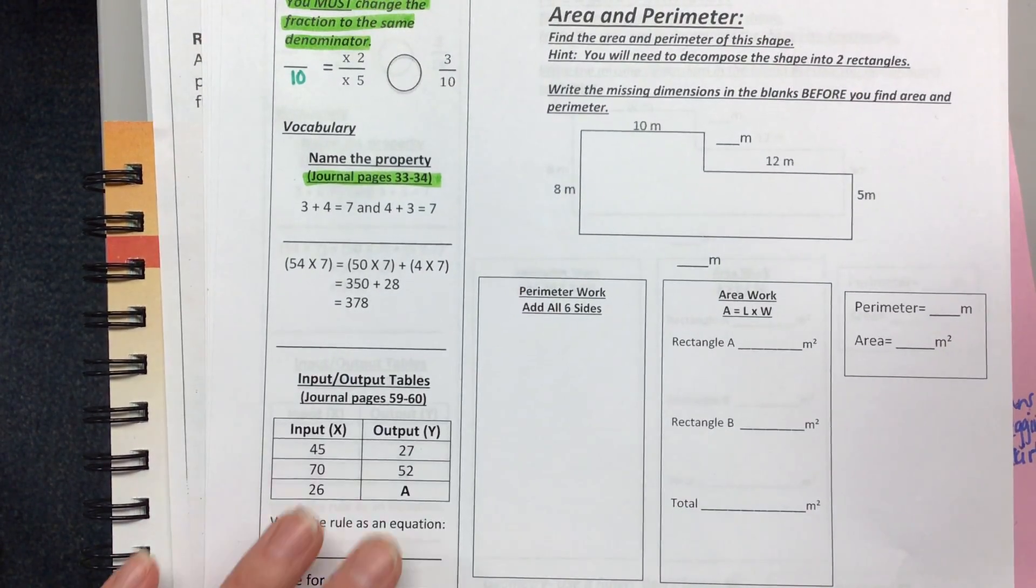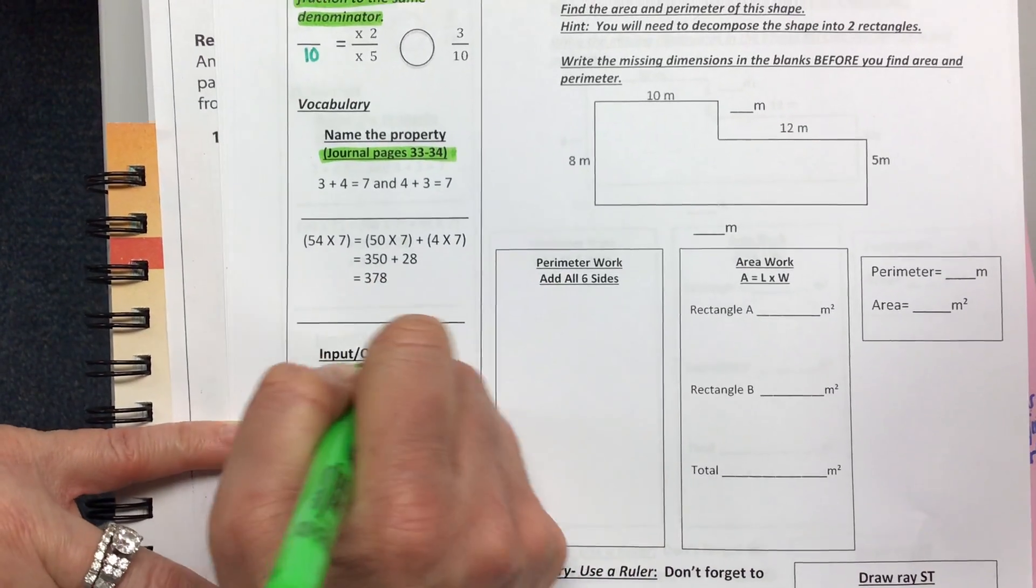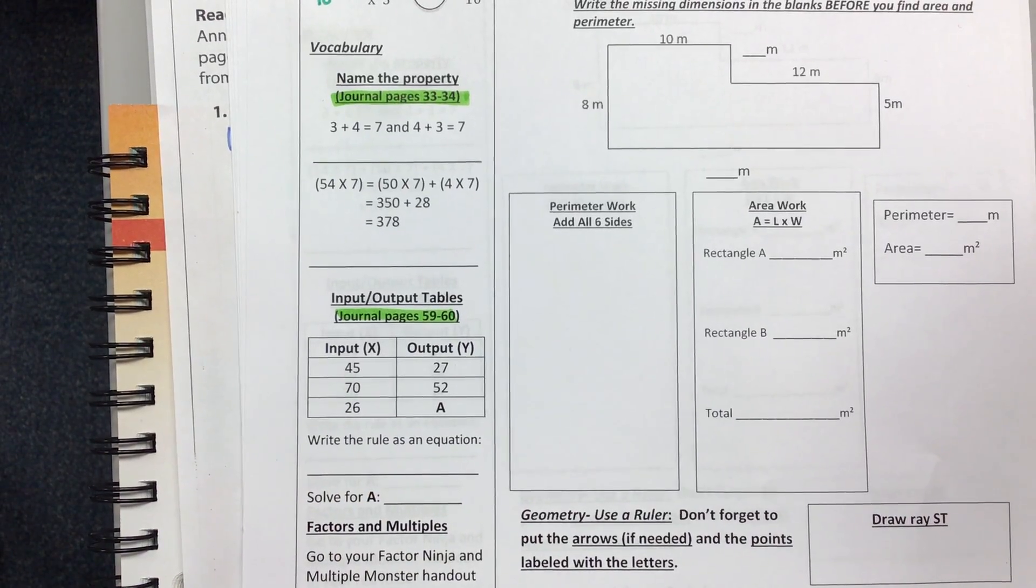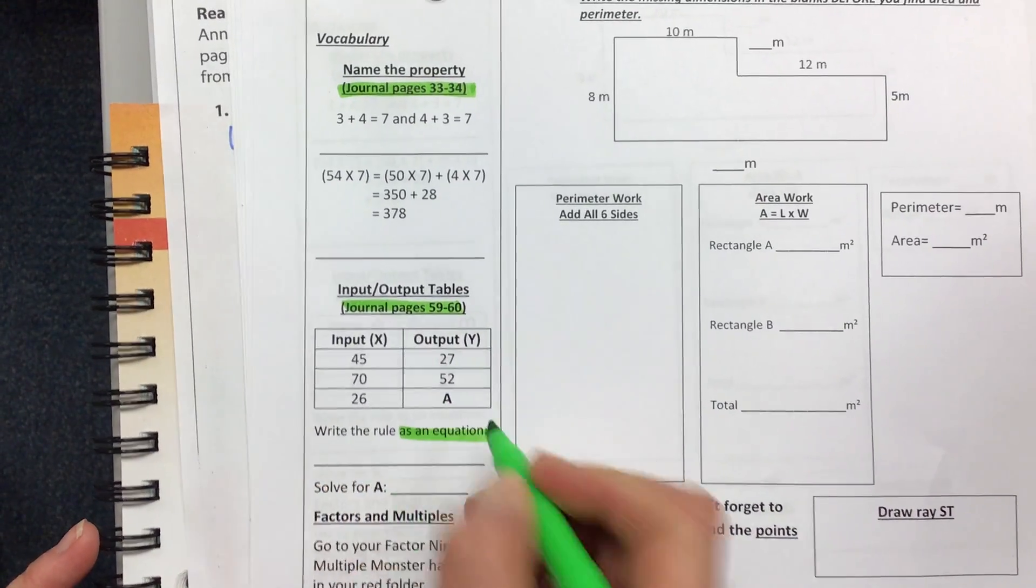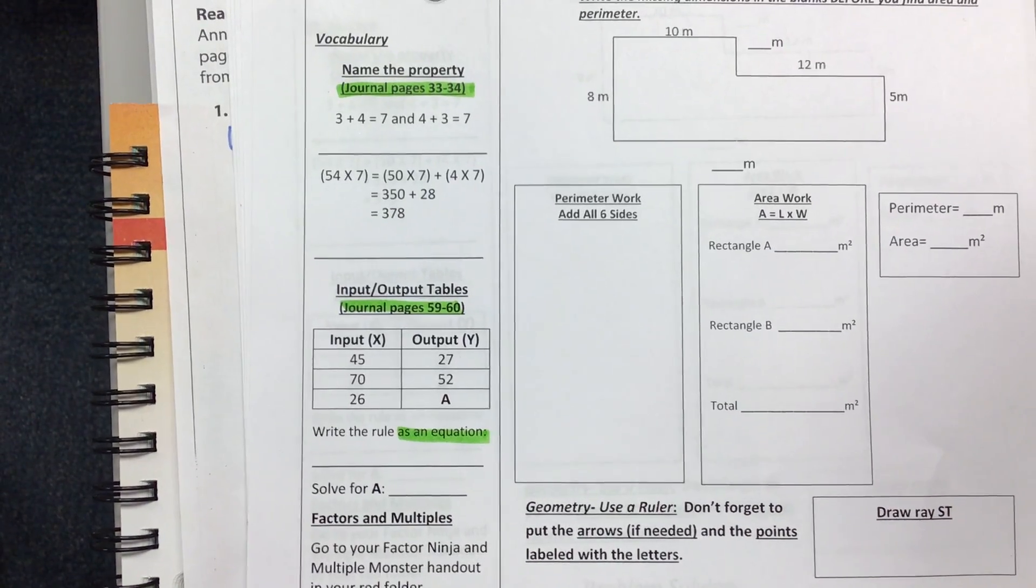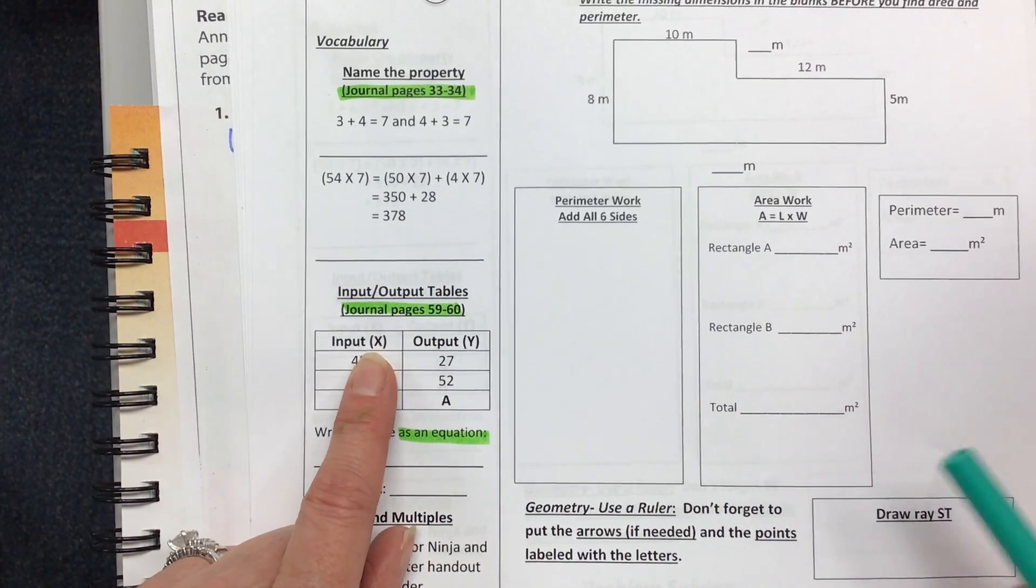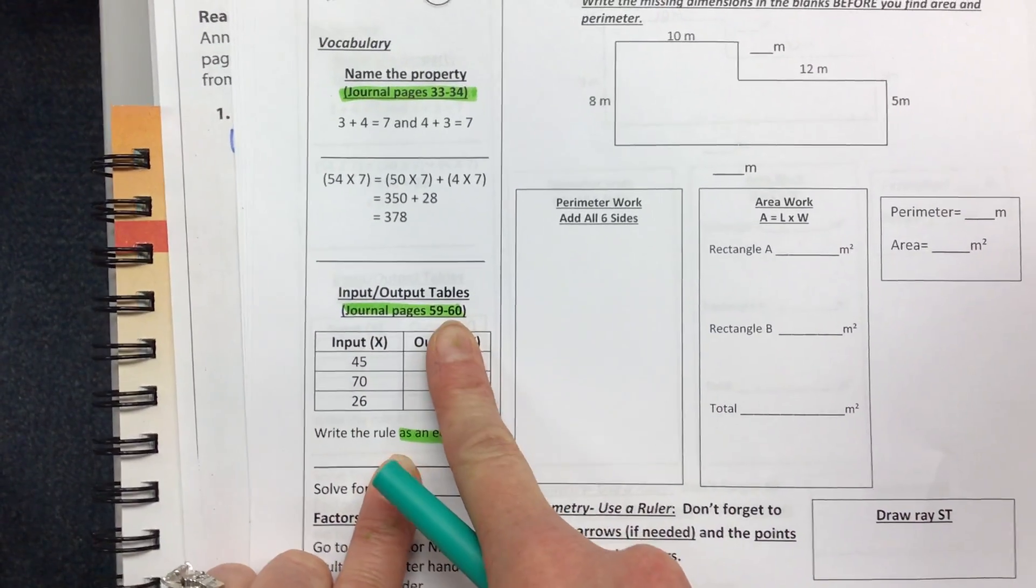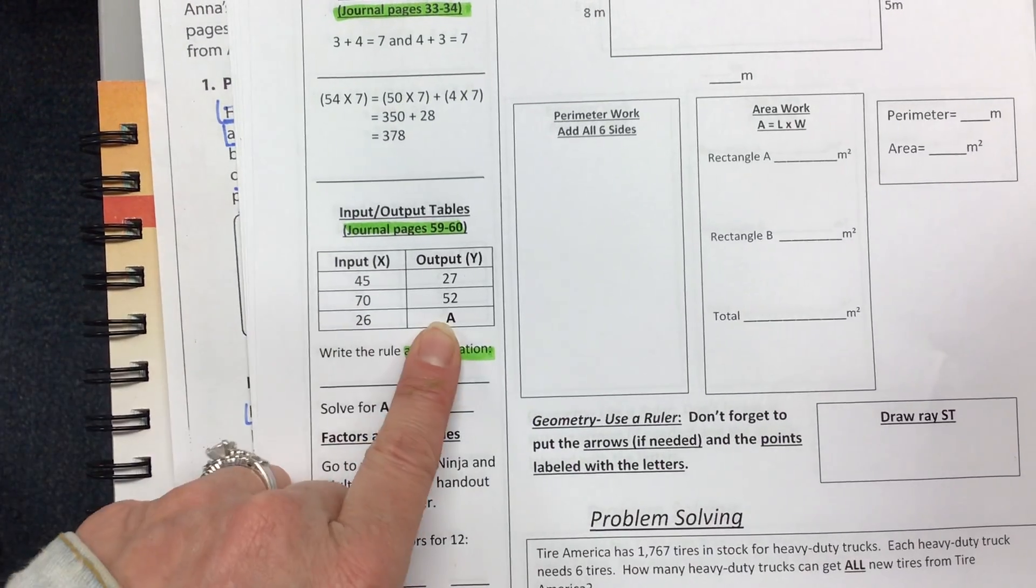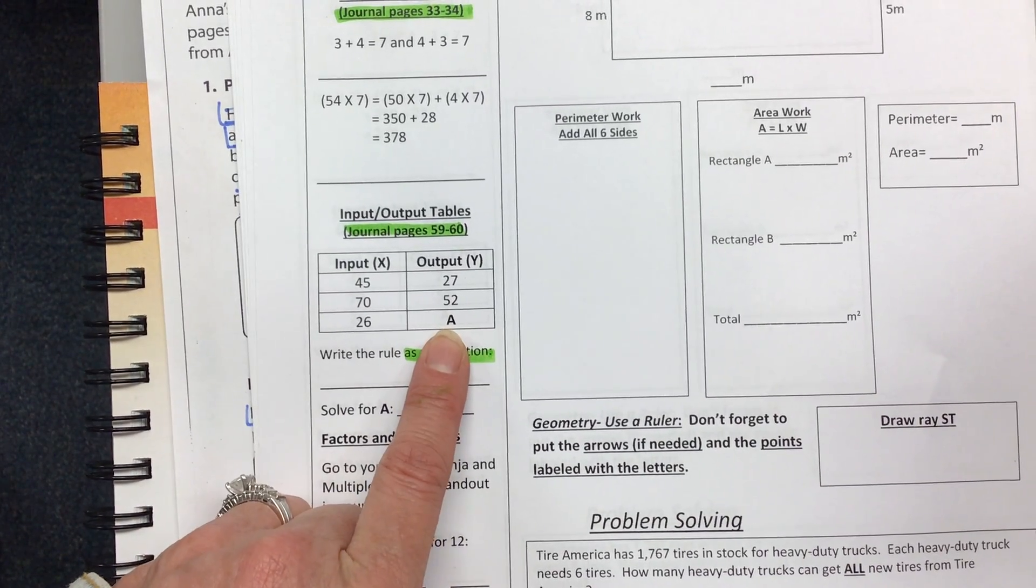Here is an input-output table. We can write the rule, or our fancy math term is write the function, and you need to write it as an equation. So let's just say that the rule is add 5. We don't write add 5 because that's not an equation. We would write x plus 5 equals y. Go back in your math journal to 59 and 60 for a reminder. And then you need to solve for this a. Once you figure out the rule, figure out what you need to do to solve for a.